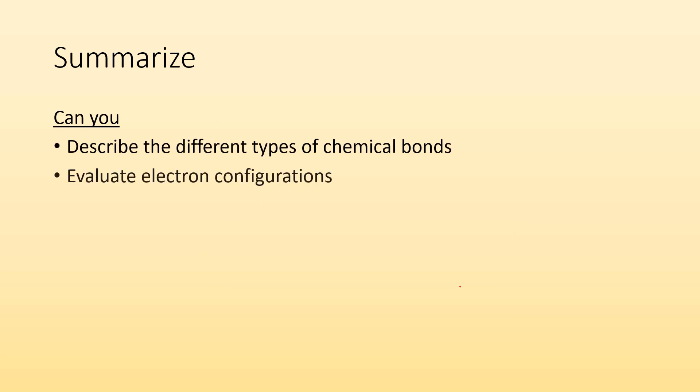So summarize. Can you describe the different types of chemical bonds? Can you evaluate electron configurations? Can you draw Lewis dot diagrams? And can you apply the octet rule while being aware of its limitations? I hope so. Okay, bye.